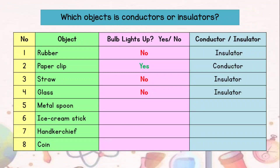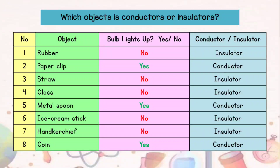Glass? No, it is an insulator. Metal spoon? Yes, it is a conductor. Ice cream stick? No, it is an insulator. Handkerchief? No, insulator. And the last one, coin — the bulb lights up, so it is a conductor.